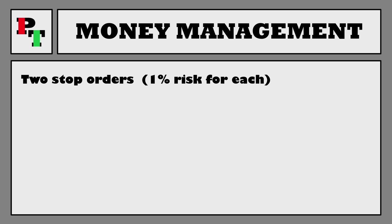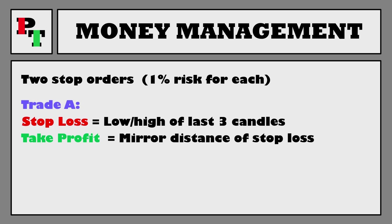The stop order will be split into two sub-trades, each worth 1% capital risk. For example, with a $10,000 account, 1% is $100, so we'd lose about $100 on both sub-trades for a total of $200 lost. Sub trade A — depending on whether it's a buy or sell trade — will have the stop loss at the low or high of the last three candles. For the take profit on sub trade A, it's simply going to be a 1:1 mirror of that stop loss — a 1% capital gain.